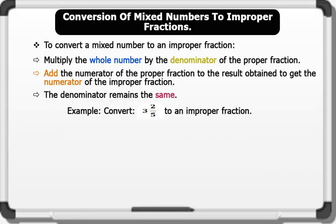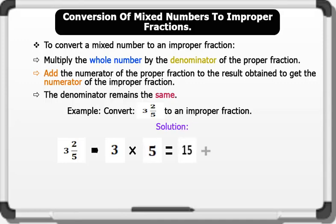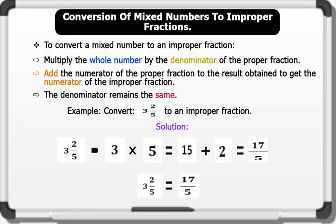Convert 3 whole number 2 over 5 to an improper fraction. Solution: 3 whole number 2 over 5 — we multiply the whole number by the denominator: 3 times 5 equals 15. We add the numerator of the proper fraction, which is 2, to give us 17 as the new numerator. Remember that the denominator, which is 5, remains the same. Therefore, 3 whole number 2 over 5 equals 17 over 5 as an improper fraction.